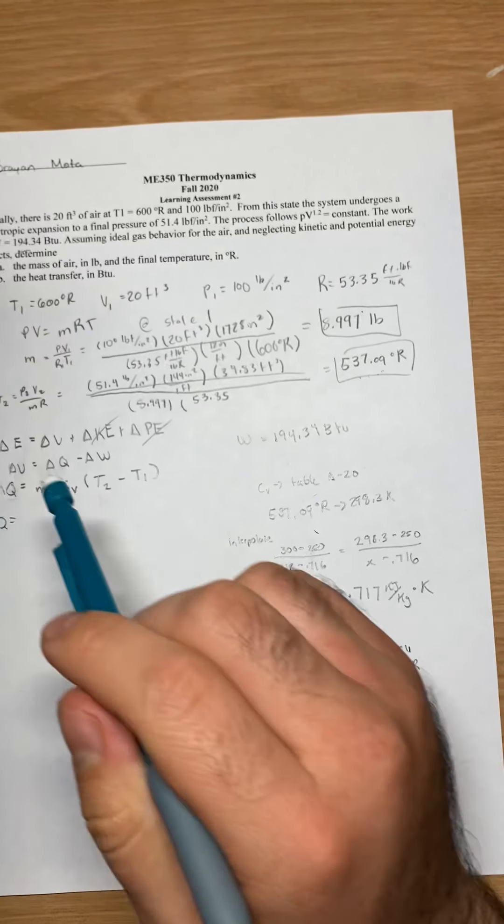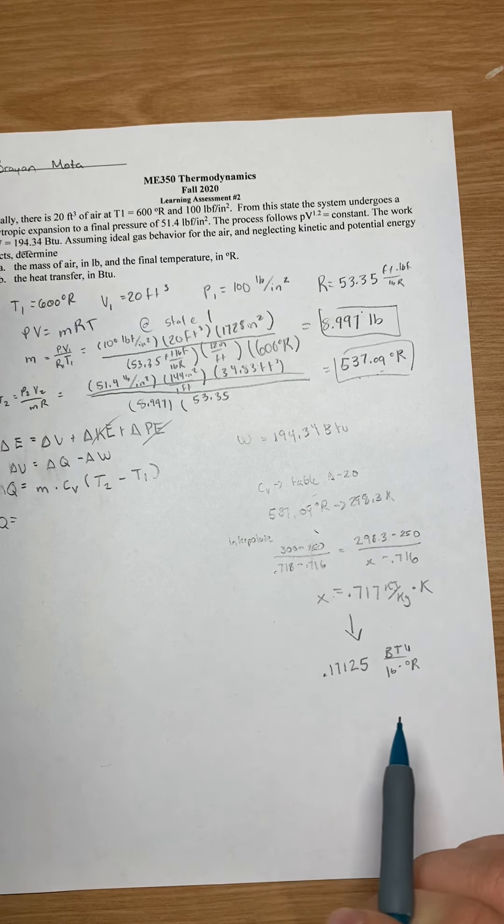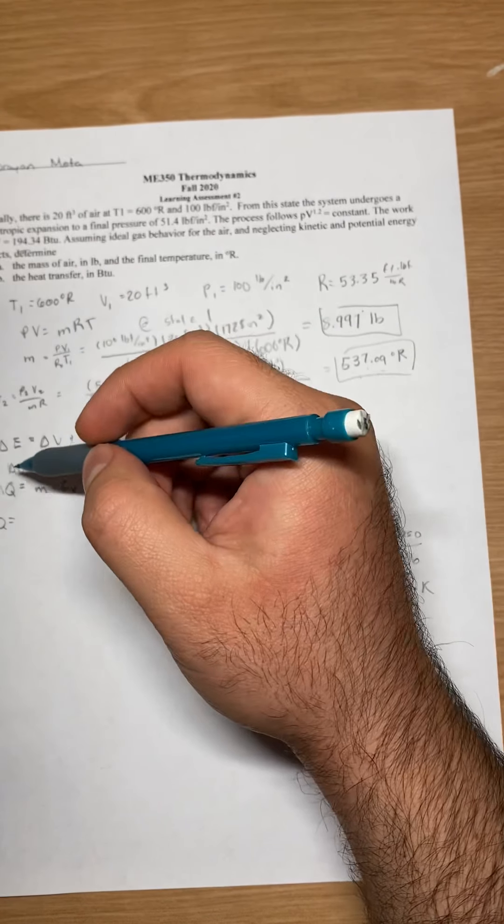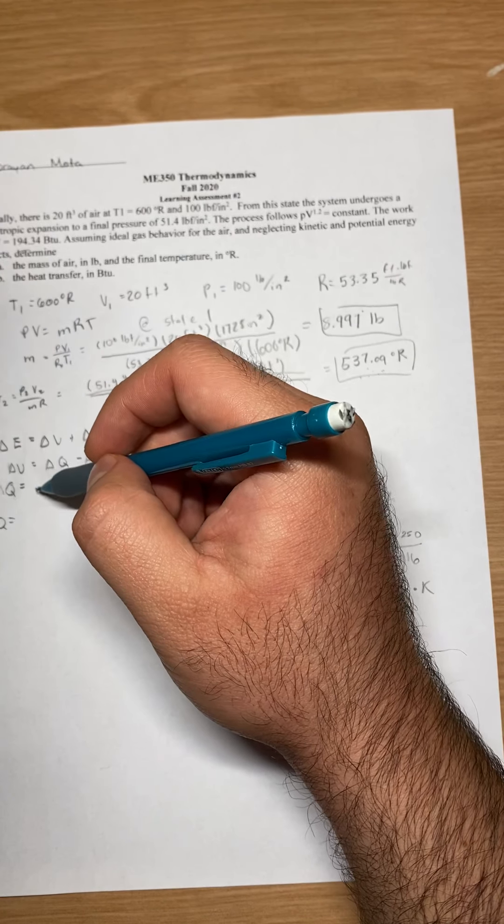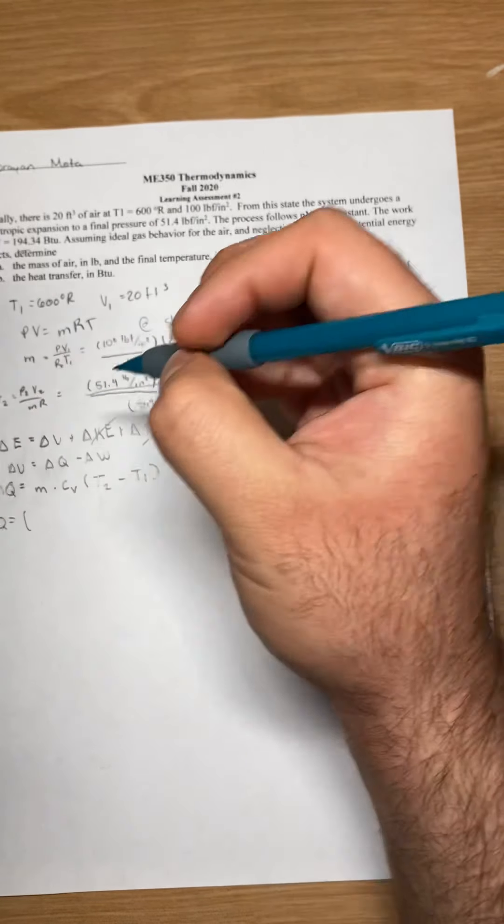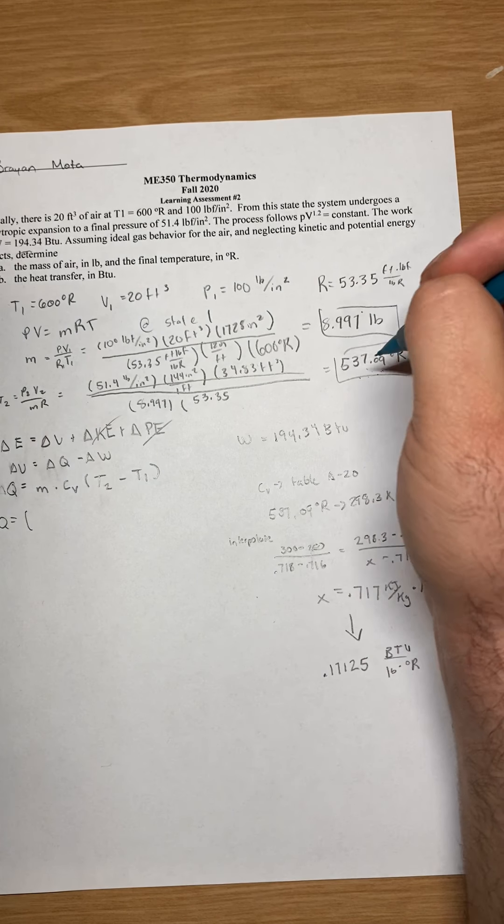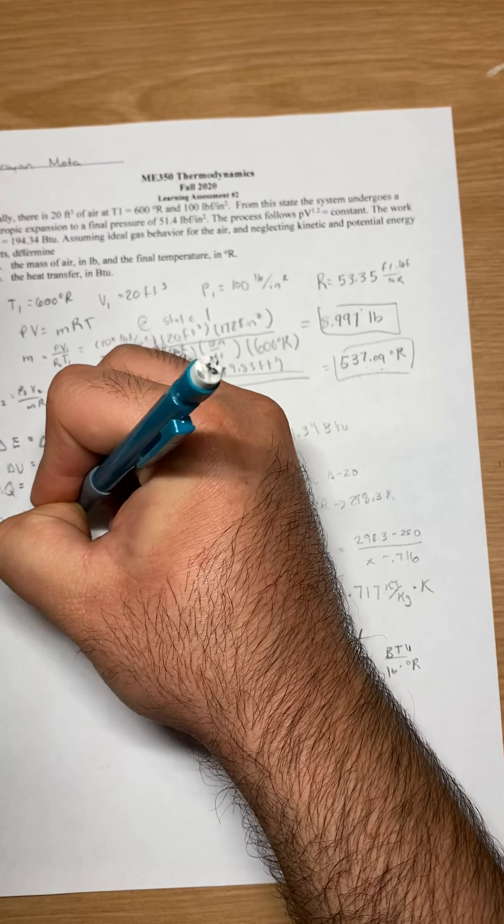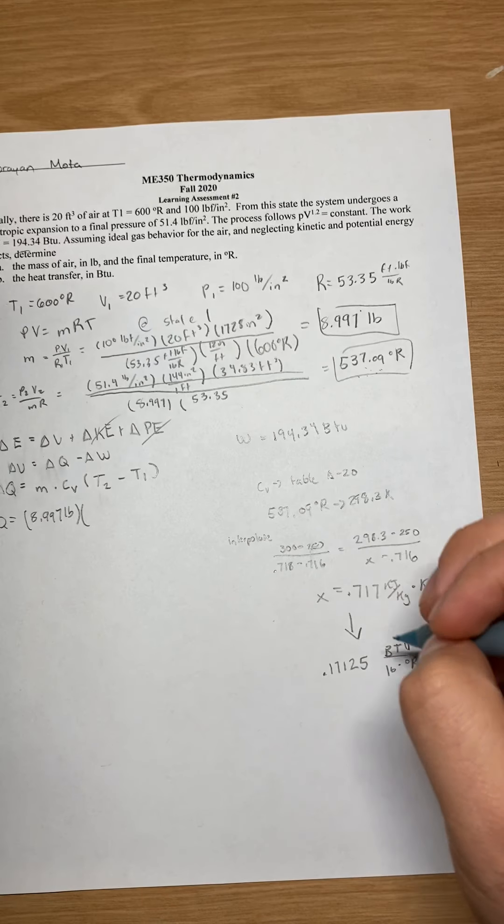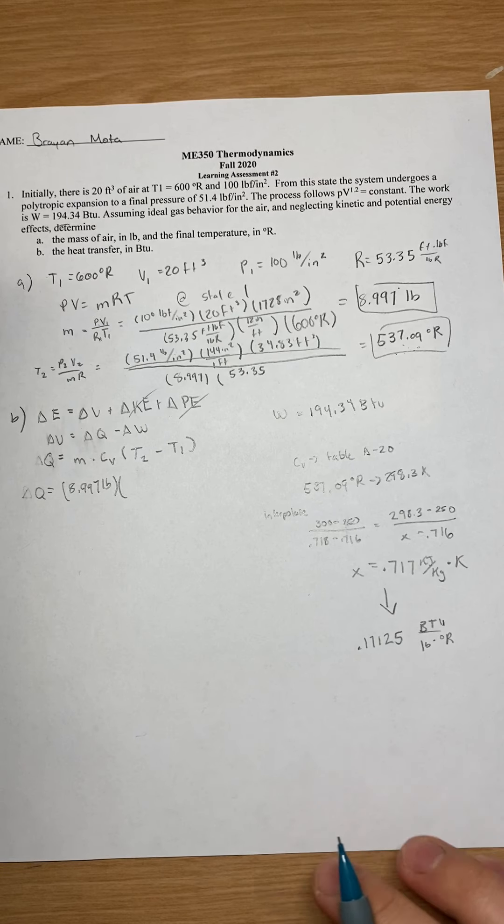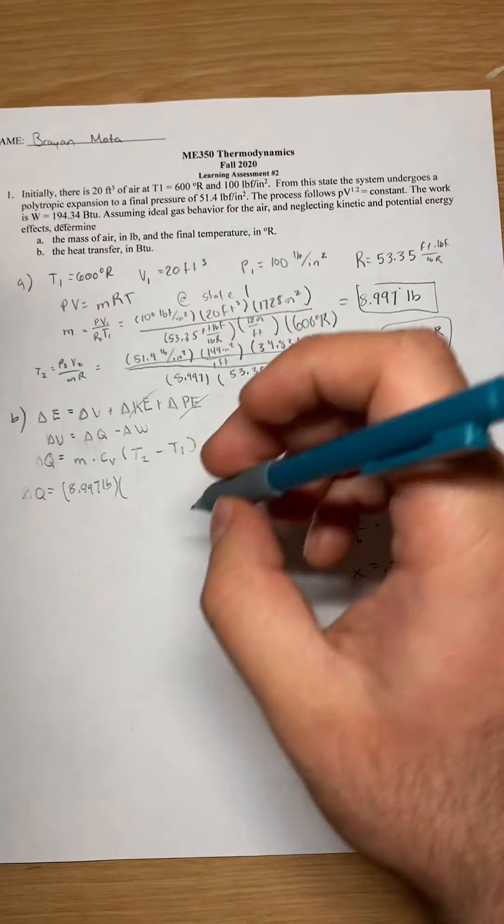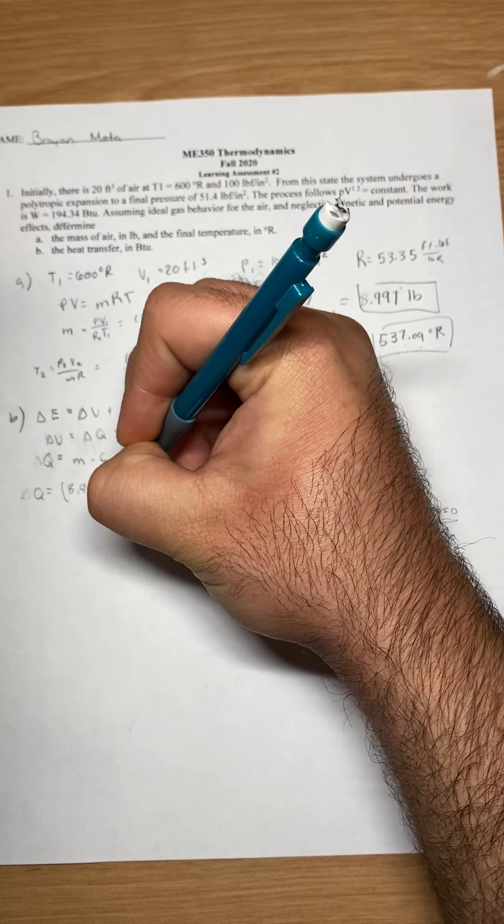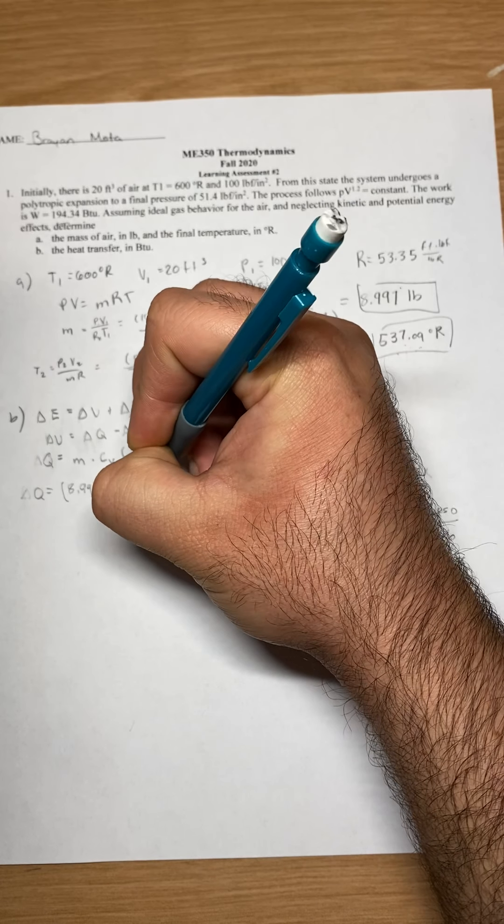This is Q at specific temperature, which is at this. So my mass is 8.997 pounds times my Cv that I found down here, and that is 0.17125.